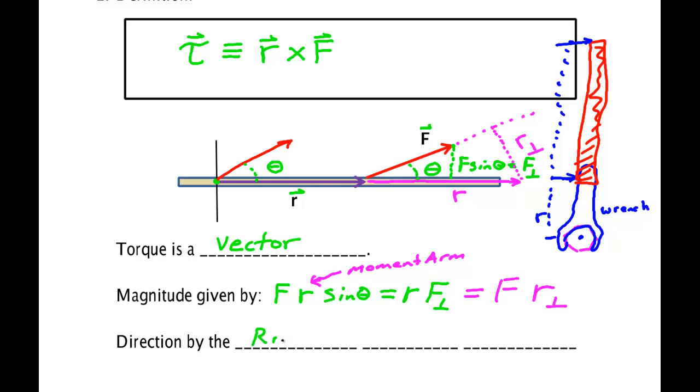The direction is given by what is called the right-hand rule. What the right-hand rule means is to wrap your fingers along r, and then twist them into F. Whichever way my thumb points, that's the direction of the torque.